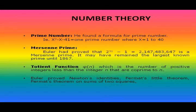That Mersenne prime may have remained the largest known prime until 1867. Euler also invented the totient function φ(n), which is the number of positive integers less than n that are coprime to n. Using properties of this function, he generalized Fermat's Little Theorem to what is now known as Euler's theorem.